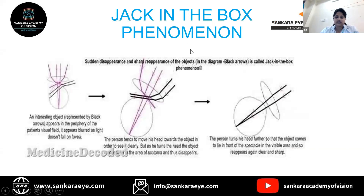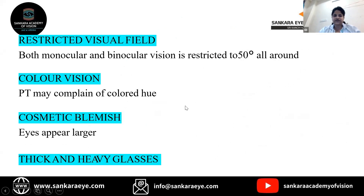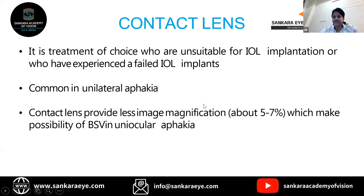The jack-in-the-box phenomenon also occurs because of the prismatic effect at the edge of the lens. The pin cushion effect — where the edge appears to bend — is also due to the prismatic effect. The visual field will be restricted to 50 degrees all around, color vision will be impaired, and there will be cosmetic impact as the eyes appear larger with thick and heavy glasses.